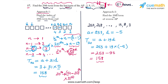Both approaches are correct. If you keep in mind that the Kth term from the end is the (N−K+1)th term from the beginning, you will not face any issues even with approach 1.